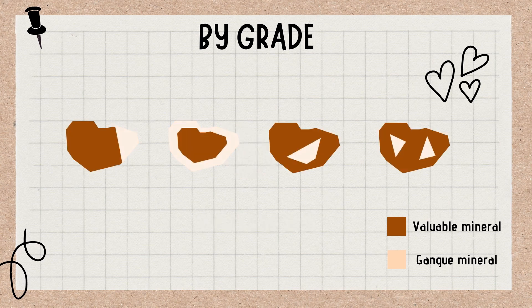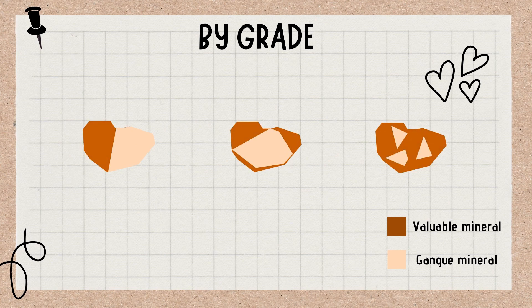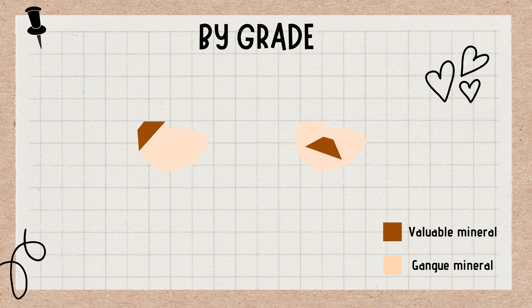In the second example, 25% of the entire particle volume or surface area consists of gangue, so it is only 75% liberated. In the next, 50% of the entire particle volume or area is gangue, so it is 50% liberated. And for the last one, 75% of the volume is gangue, so it is only 25% liberated by grade.